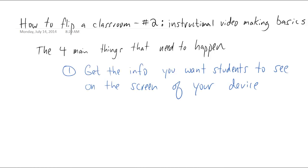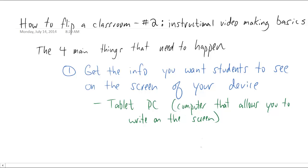Number one, you need to get the information that you want students to see in this video onto the screen of your device. Now there are several different options for doing this. Personally I'm using a tablet PC. This is a computer that allows you to write on the screen and you are seeing exactly what I'm writing on the screen right now. You could use a tablet of any kind, like an iPad or a Windows Surface tablet or a Samsung tablet or any other number of tablets that are out on the market right now. As long as you can get the information you want onto the screen, that'll work just fine for you.